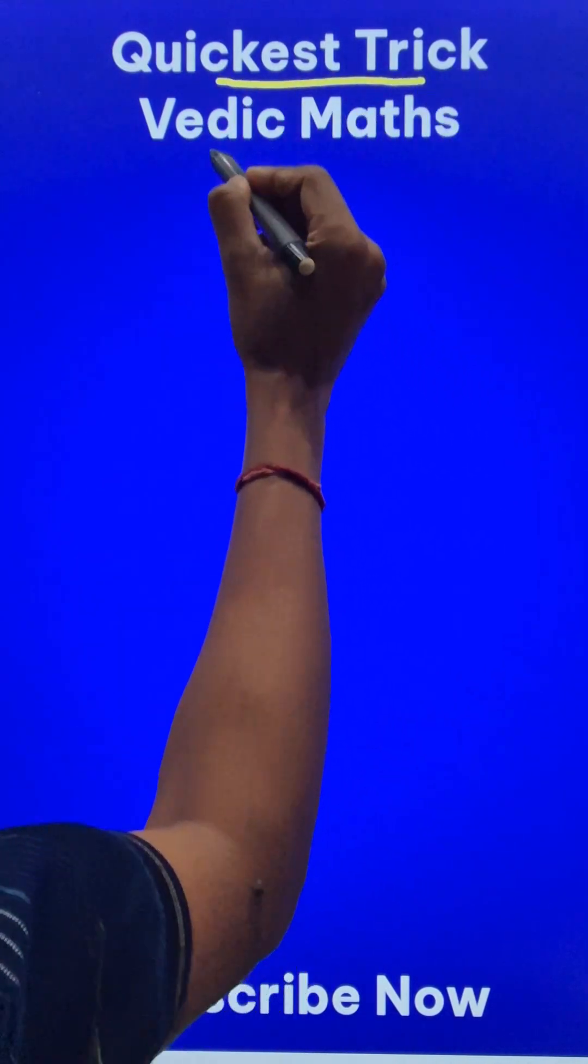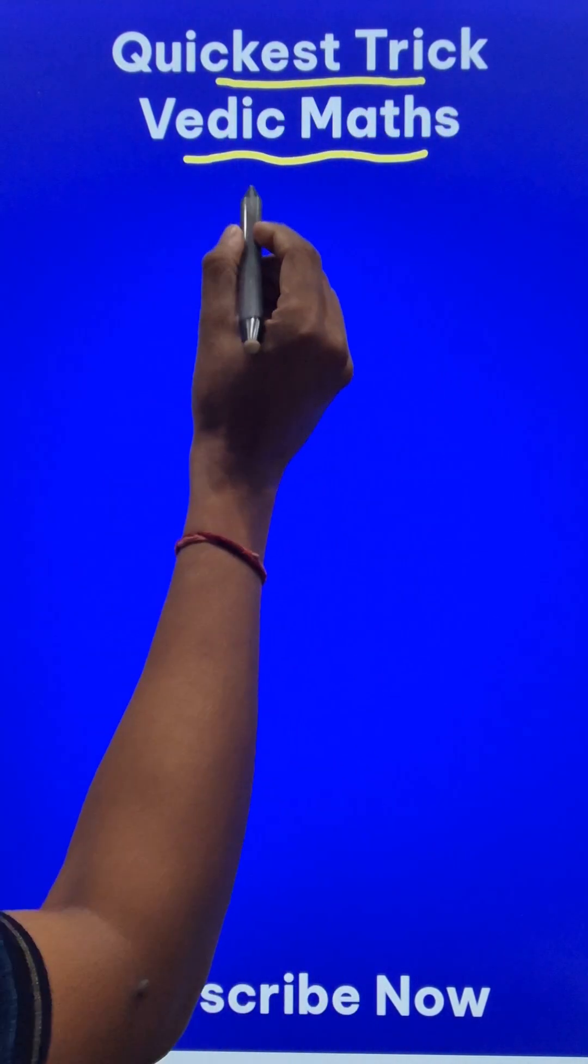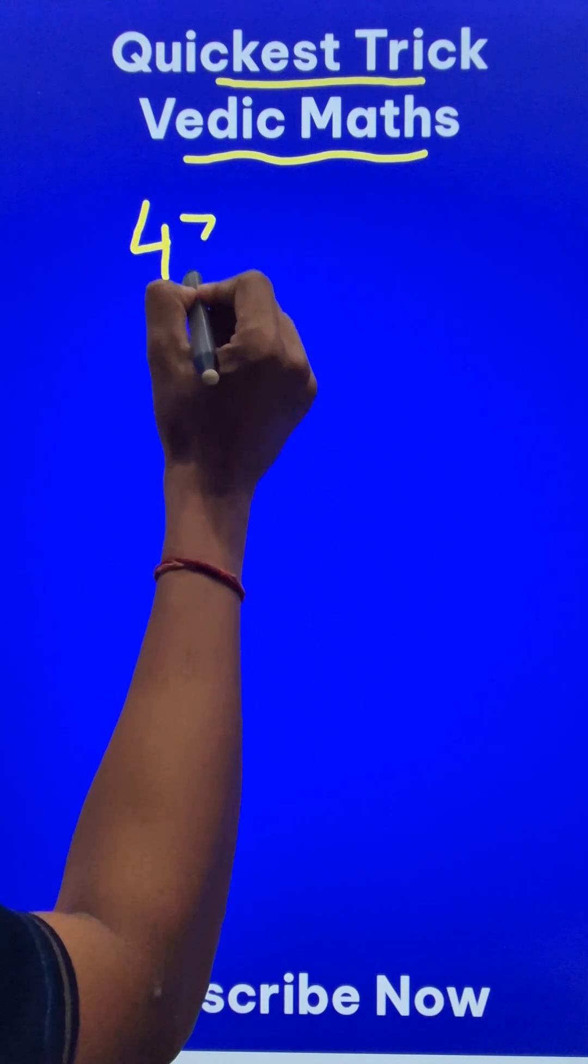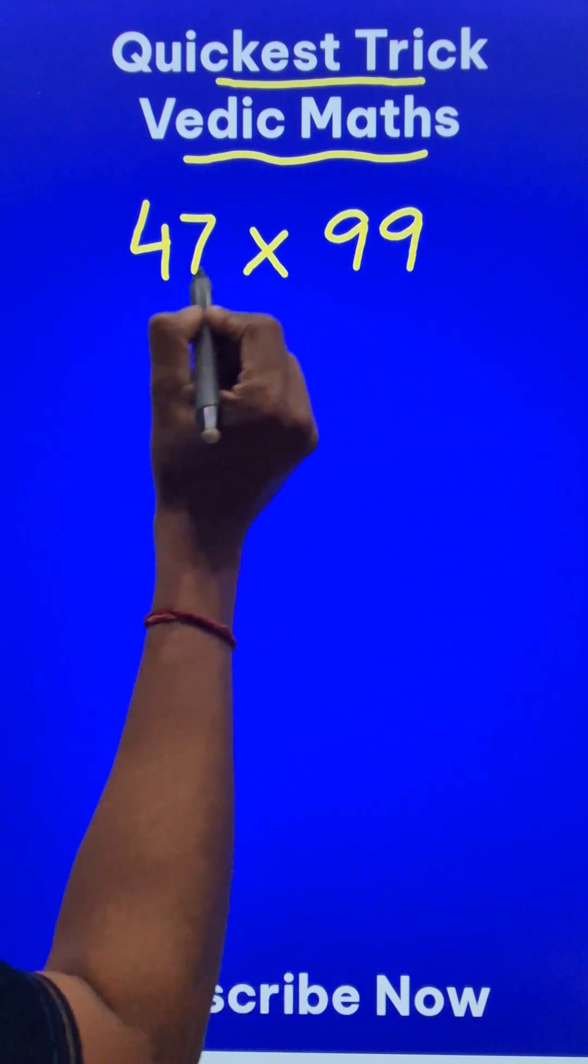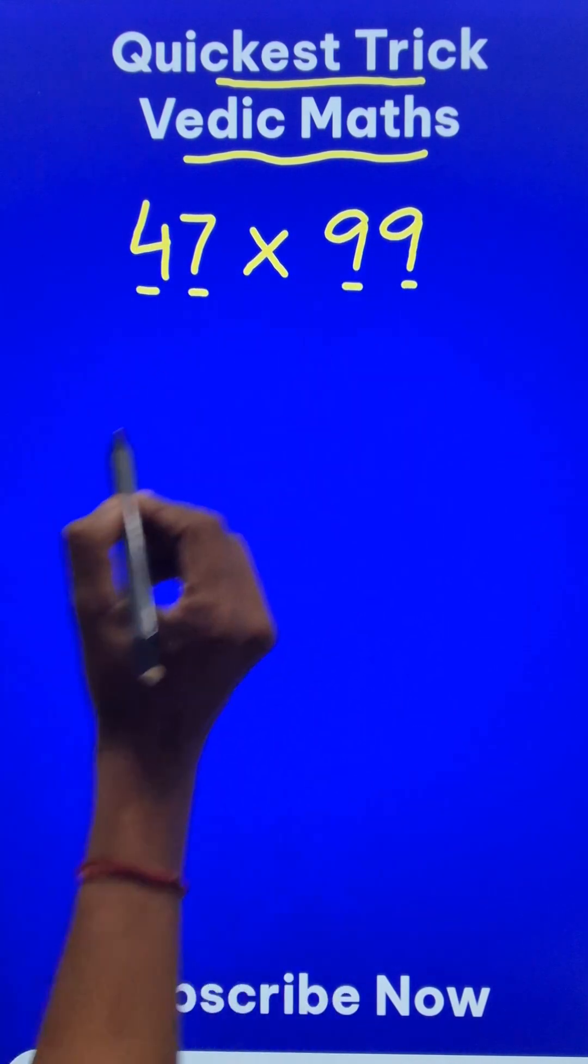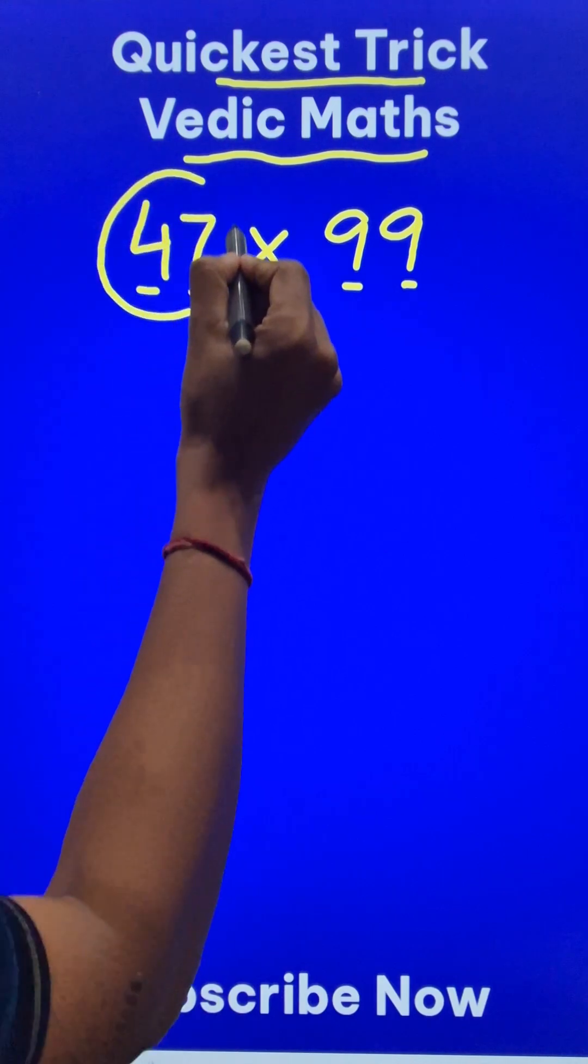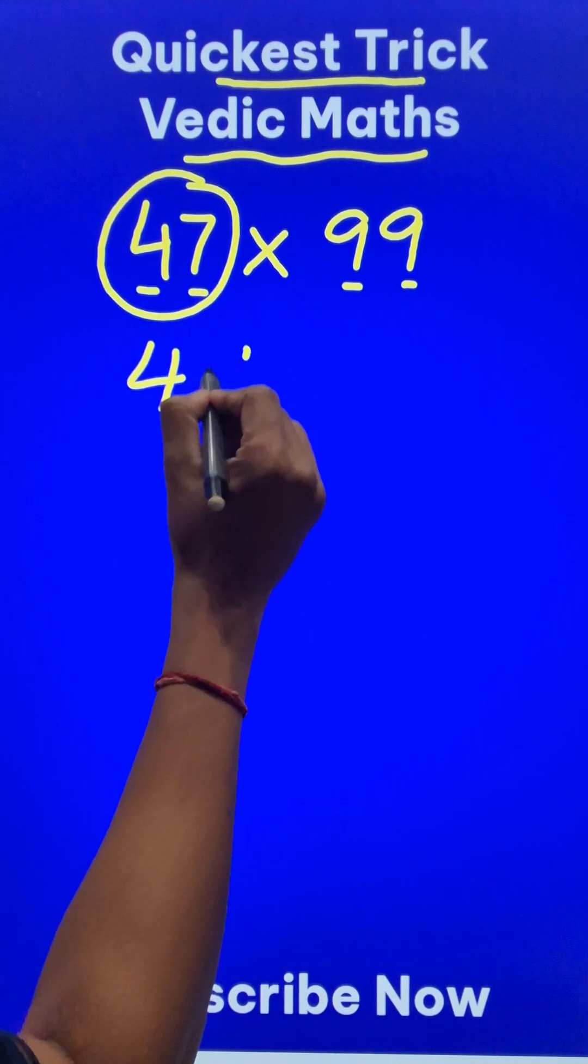Here is the quickest and smartest Vedic Maths trick to multiply any number like 47 by two 9s. So here you have two digits and here you have two 9s. So first reduce this number by 1. So 47 becomes 46.